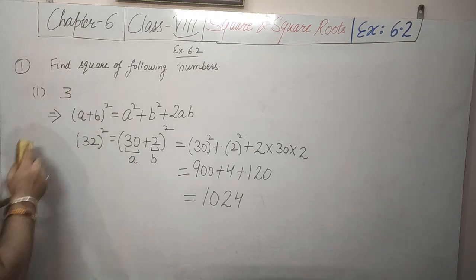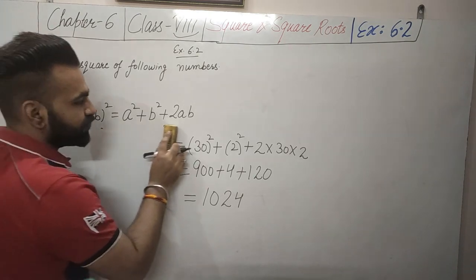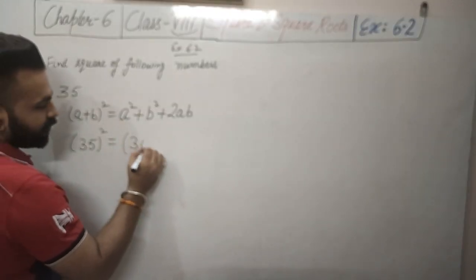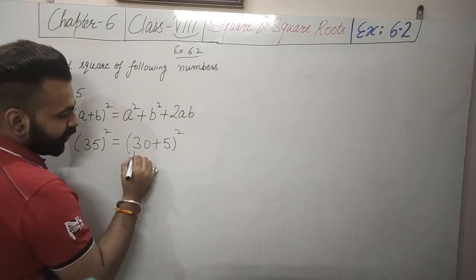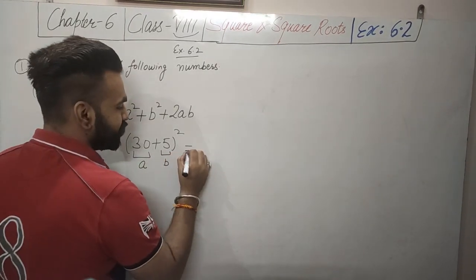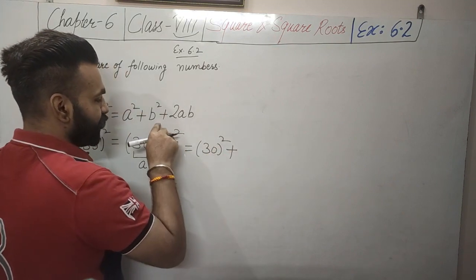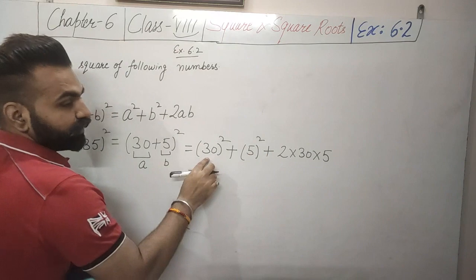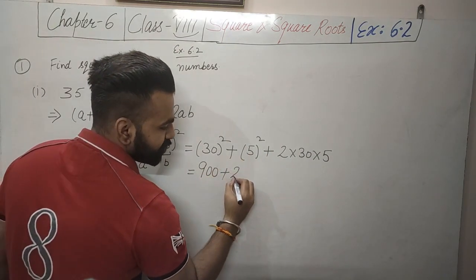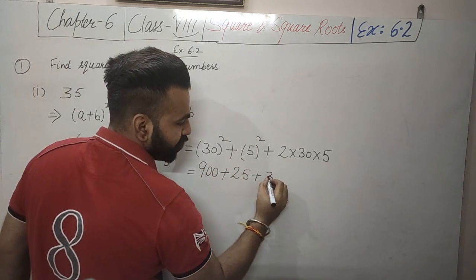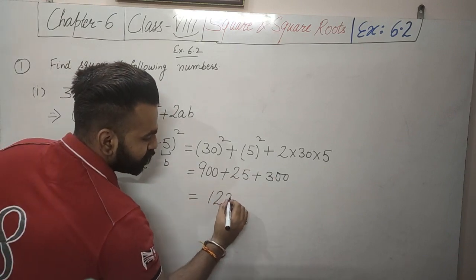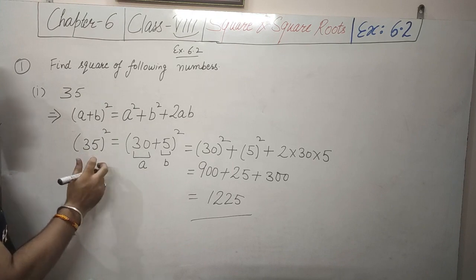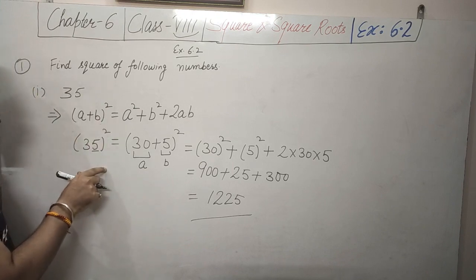Second part: 35 squared. We write 35 as 30 plus 5, so a is 30 and b is 5. This equals 30 squared plus 5 squared plus 2 into 30 into 5 equals 900 plus 25 plus 300 equals 1225. We can also calculate 35 squared using the unit-digit-5 method studied in the introduction, since the unit digit is 5 — you can use either method.